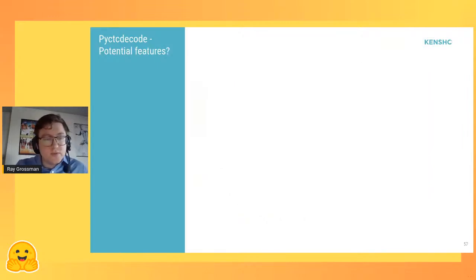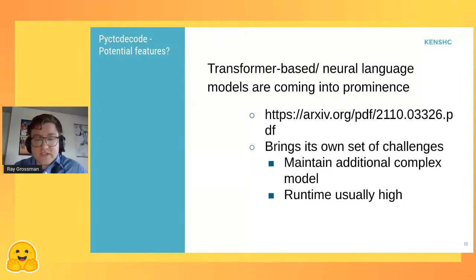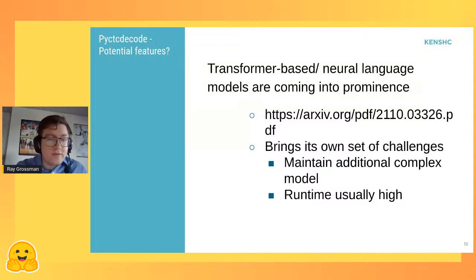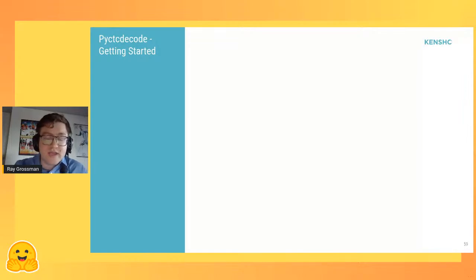There are more features we want to add to PyCTC decode. One thing on the docket is potentially adding transformer-based or neural language models, though this brings challenges — it's a high-complexity model to maintain in production and has high runtime. If you have something you think would be useful, feel free to submit a feature request to the GitHub.